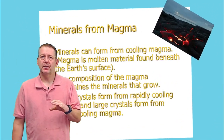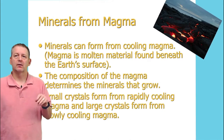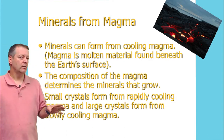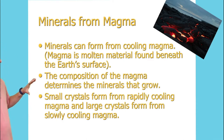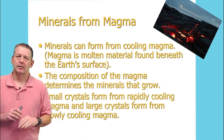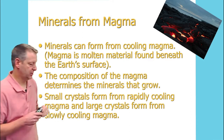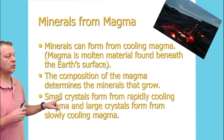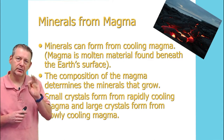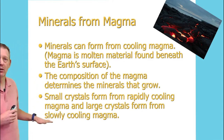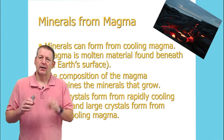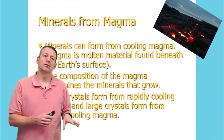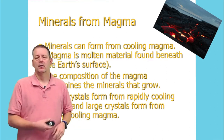Minerals can form from magma deep in the earth. As magma cools and turns solid, we can get all kinds of minerals. One important note: minerals can have large or small crystals depending on how fast or slow they cooled. Crystals that cooled really fast have tiny crystals — like lava formed outside the earth — while slow cooling produces large crystals, like those found in granites inside the earth.